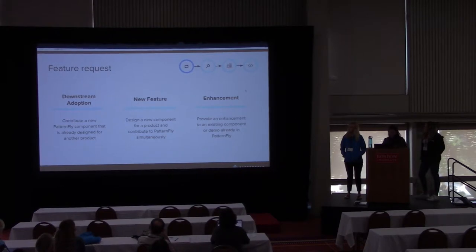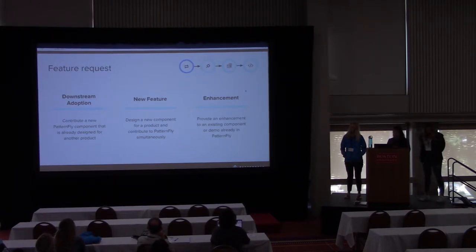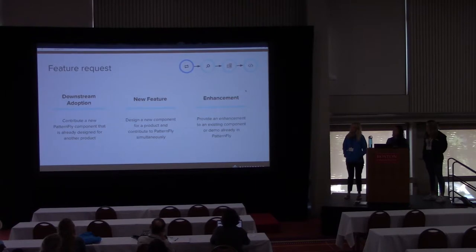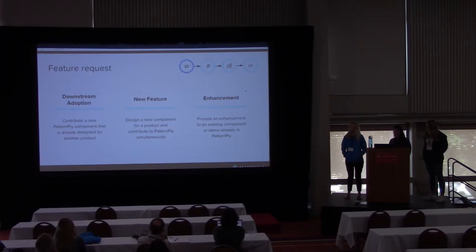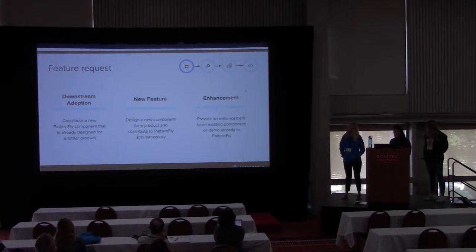The first step is feature requests, and there are various ways that requests come into PatternFly. The first kind is downstream adoption — when someone has a component already designed in another product but it doesn't yet exist in PatternFly. We also get completely new feature requests, where the component doesn't exist in another product nor in PatternFly, so the design is added to the product and the design system simultaneously. Then we have enhancements, when we need an addition to an existing component to make it more flexible — for example, adding a multi-select option to a previously single-select component.